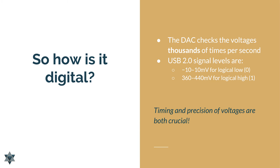So how exactly is it digital? The way this essentially analog signal is turned into digital is that the DAC checks the voltages literally thousands of times every single second and looks for particular voltage levels. For USB 2.0, minus 10 to 10 millivolts would be considered low or 0, and around 360 to 440 millivolts would be considered high or 1.